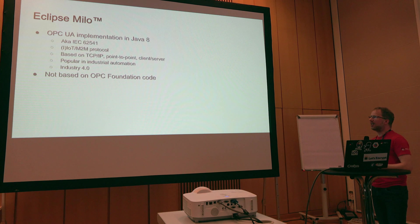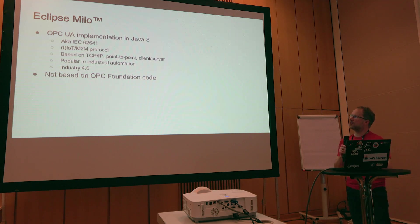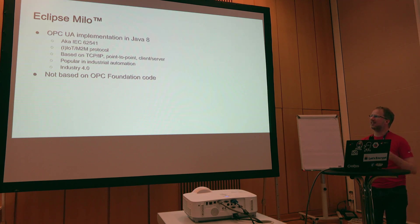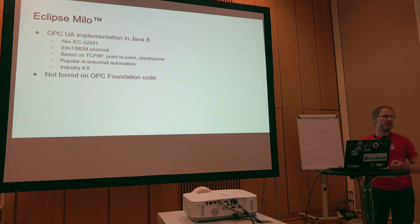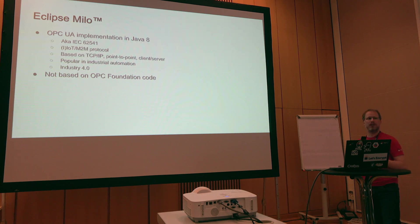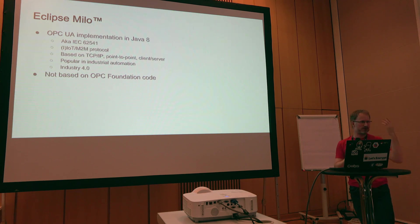Just a short recap: what is Milo? Milo is an OPC UA implementation in Java 8. OPC UA is also an IEC standard now. It is an industrial IoT protocol. What we are talking about is OPC UA binary — there are different versions, including OPC UA XML or web service based, and an upcoming PubSub implementation which may be AMQP or MQTT. Milo is OPC UA binary, which is a TCP point-to-point client-server protocol. It is popular in industrial automation and plays a role in Industry 4.0.